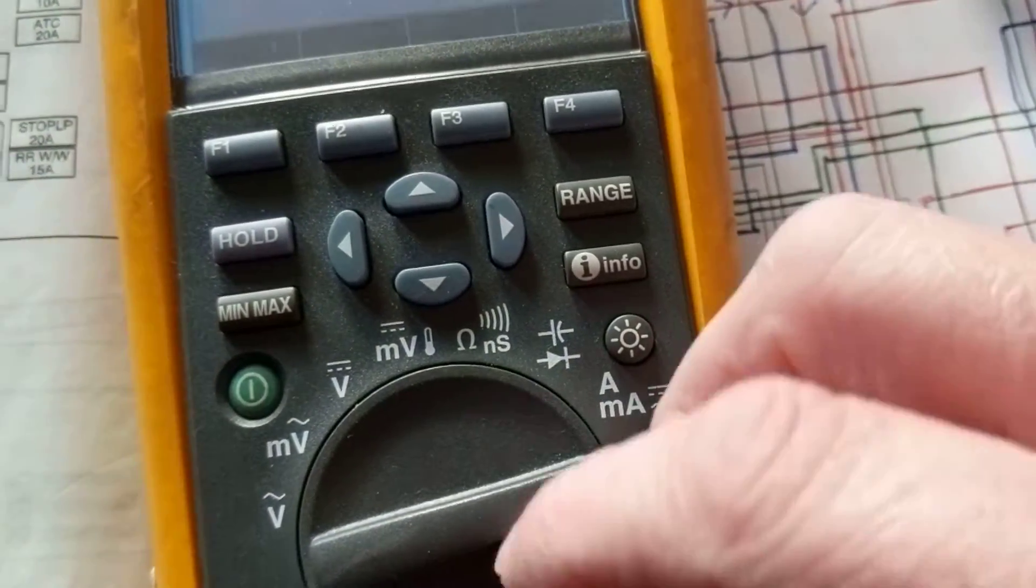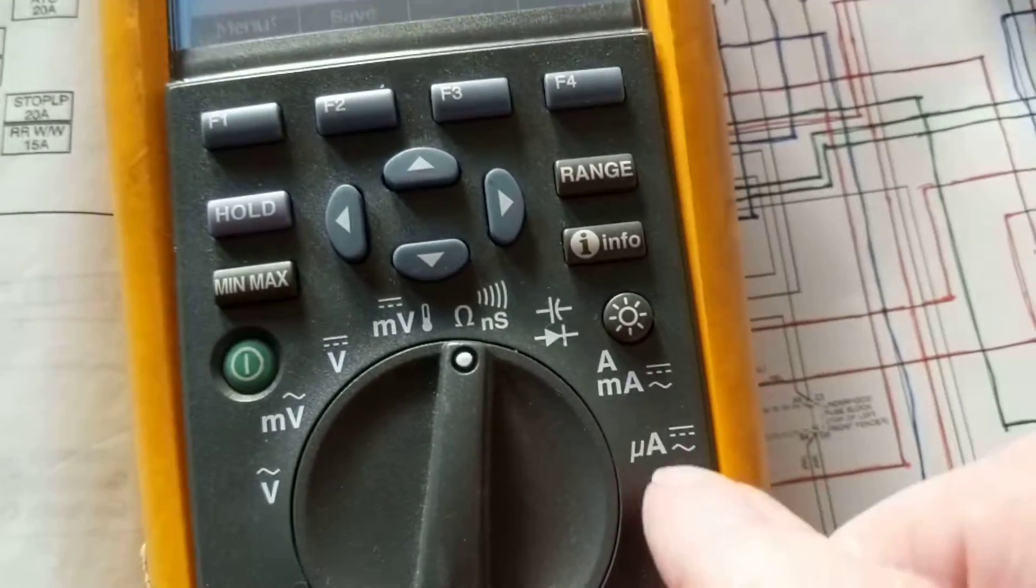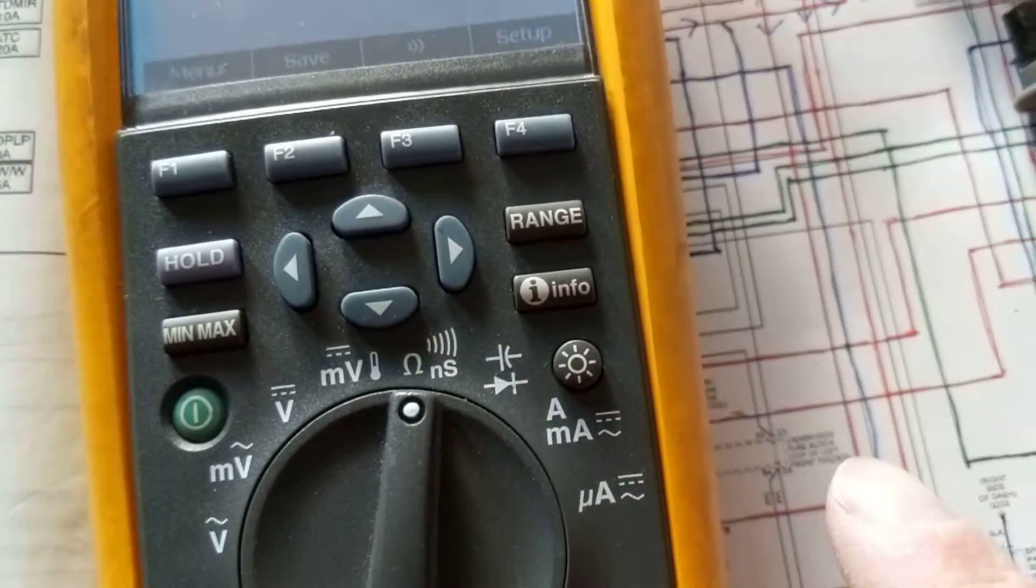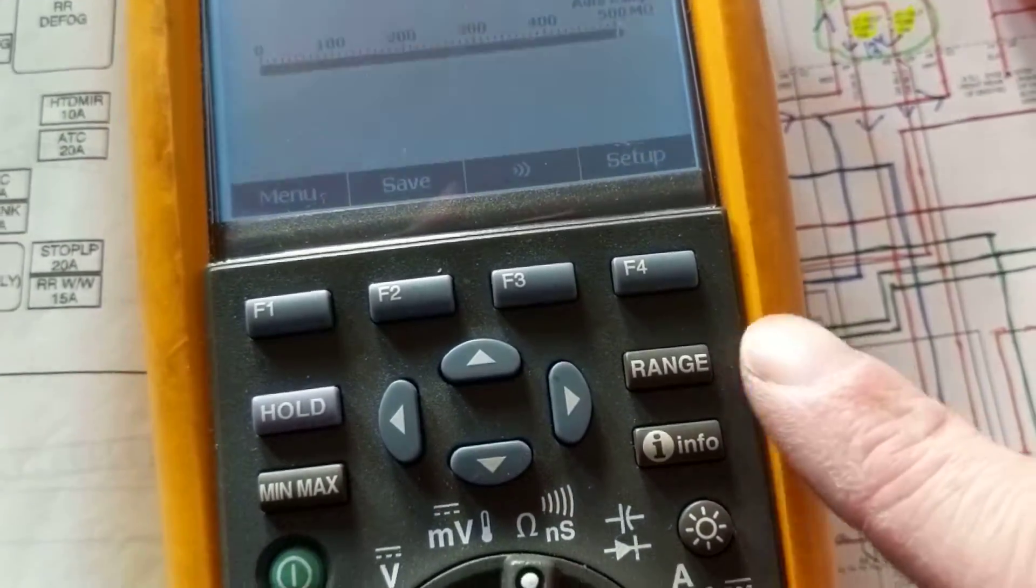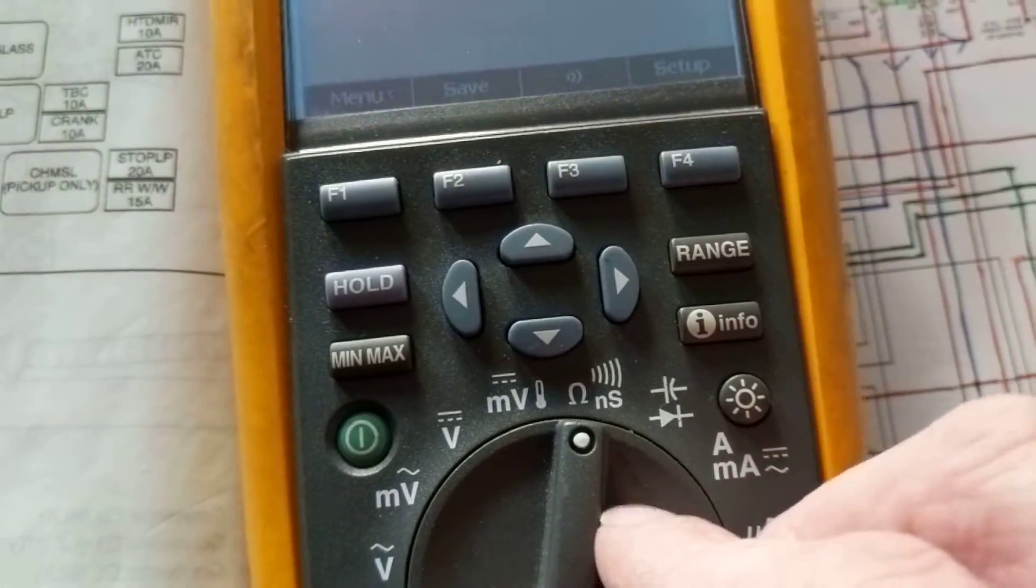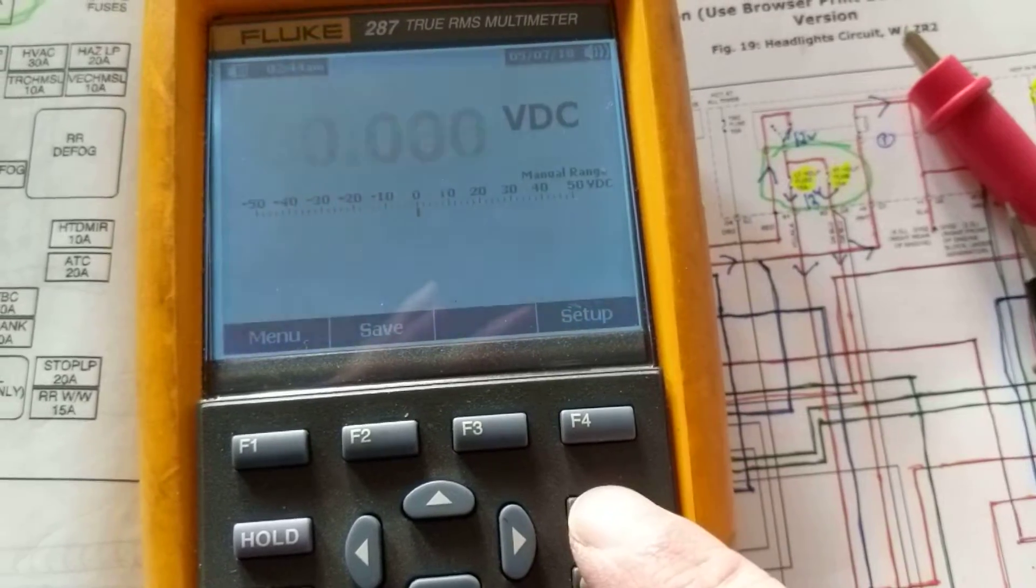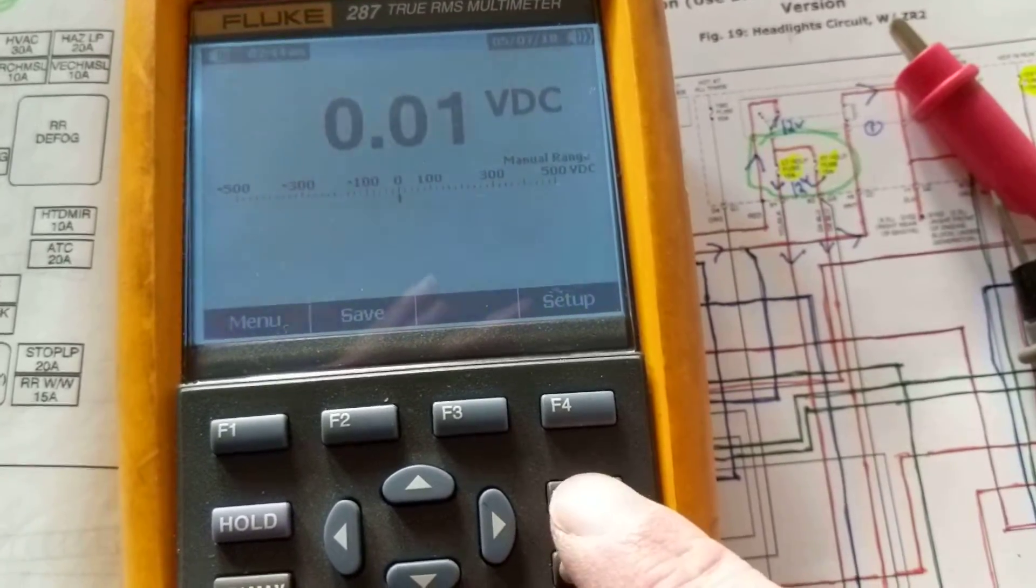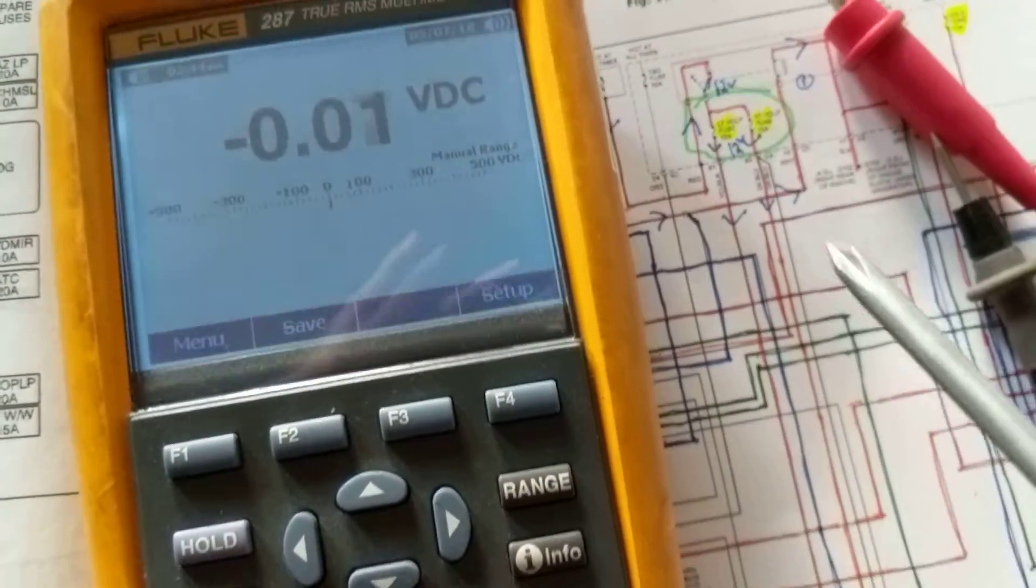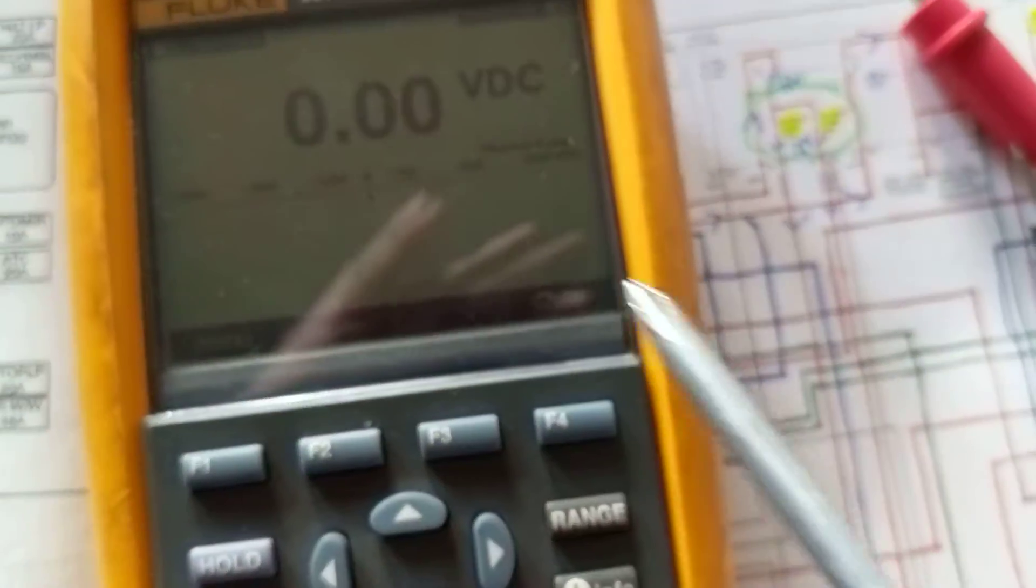Other things you have: capacitance and other things that you could do. You can have range. In other words, you could do manually, it'll give you the decimal point, will shift for you.